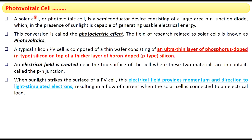A photovoltaic cell, or solar cell, is a semiconductor device which consists of a large area p-n junction diode. In the presence of sunlight, the device is capable of generating electrical energy. This conversion process is called the photoelectric effect, and this area of research related to solar cells is called photovoltaics.